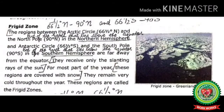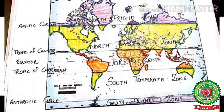The frigid zone: the regions between the Arctic Circle (66.5° North) and the North Pole (90° North) in the Northern Hemisphere, and between the Antarctic Circle (66.5° South) and the South Pole (90° South) in the Southern Hemisphere, are far away from the equator. There are two parts of the frigid zone: the North Frigid Zone and the South Frigid Zone.